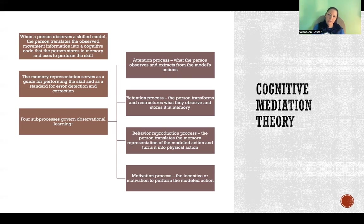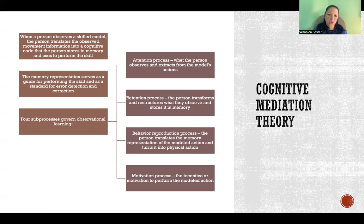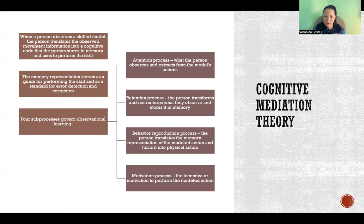There are two theories that are somewhat in competition with one another. The first is cognitive mediation theory. Under this theory, when a person observes a skilled model — an experienced demonstrator — the person translates the observed movement information into a cognitive code that they store in memory and use to perform the skill. We don't exactly know how we do that, but we watch the skilled demonstrator, take in that information, and then translate it into a way to produce that movement ourselves.